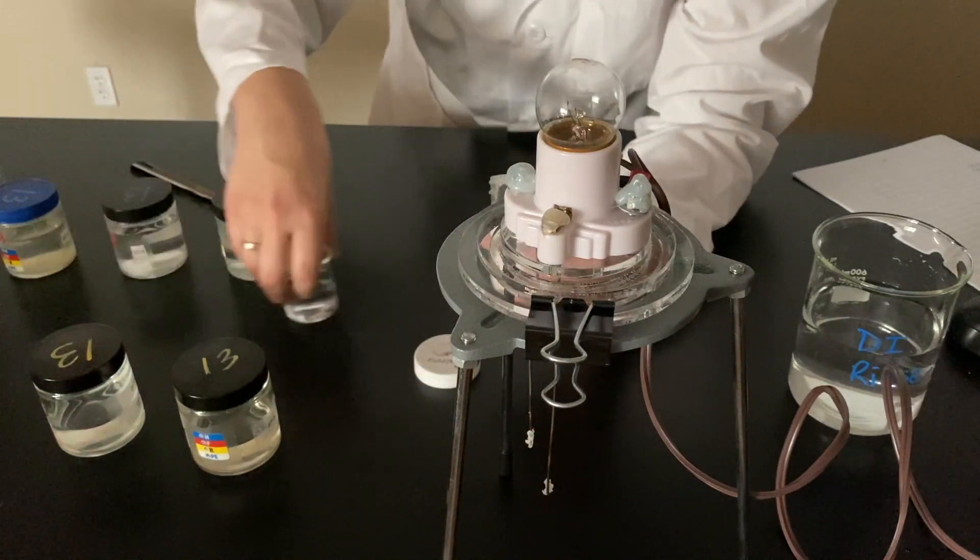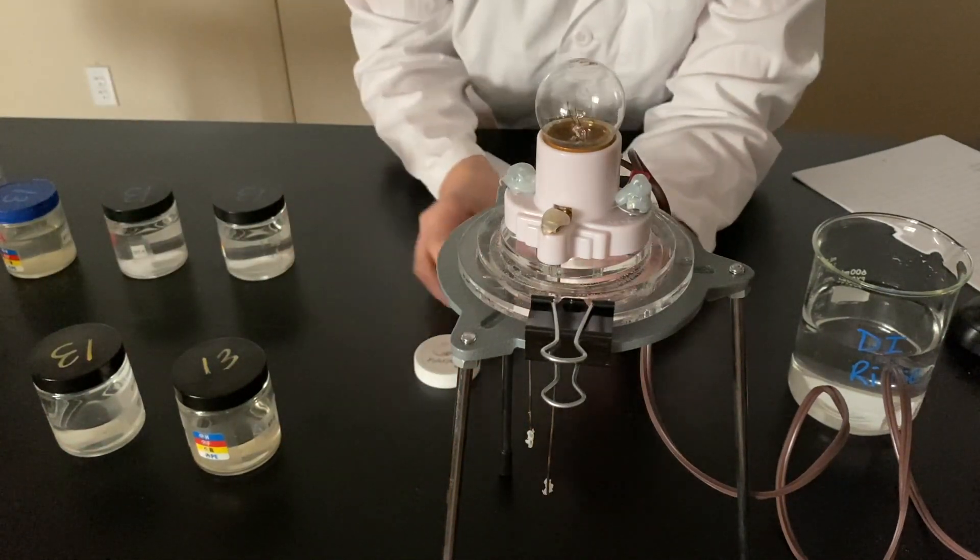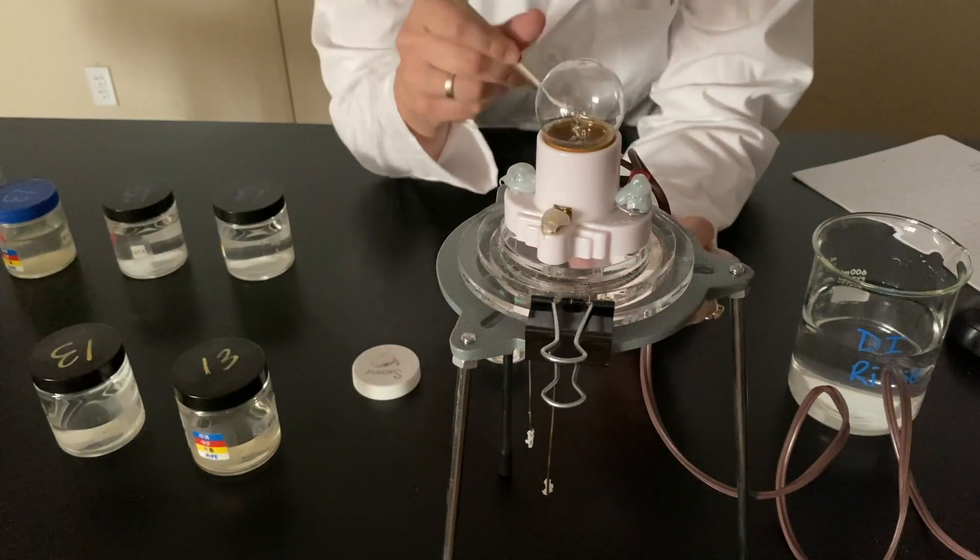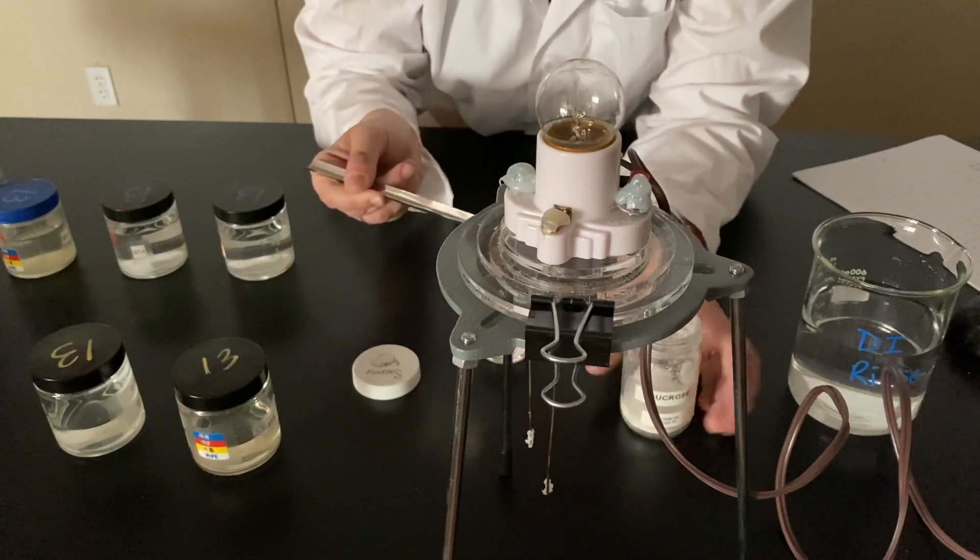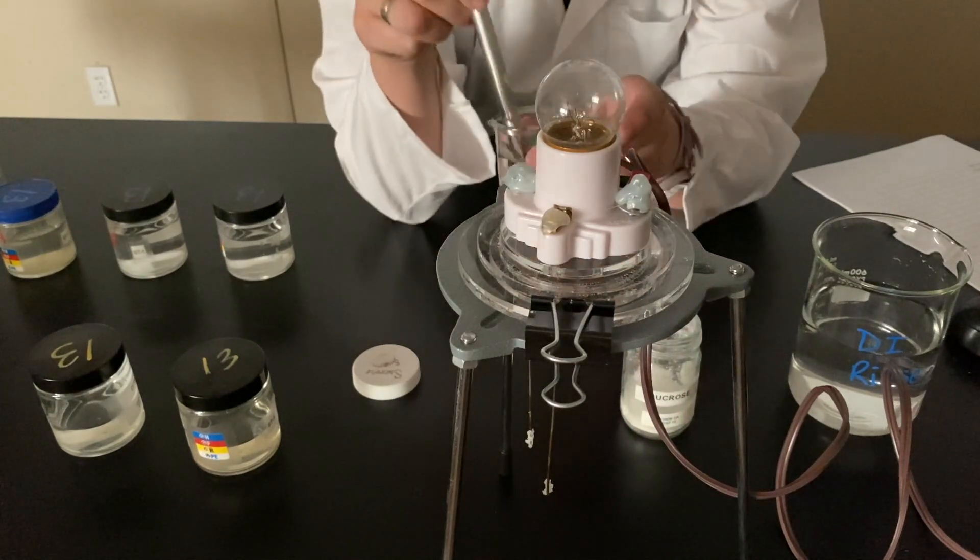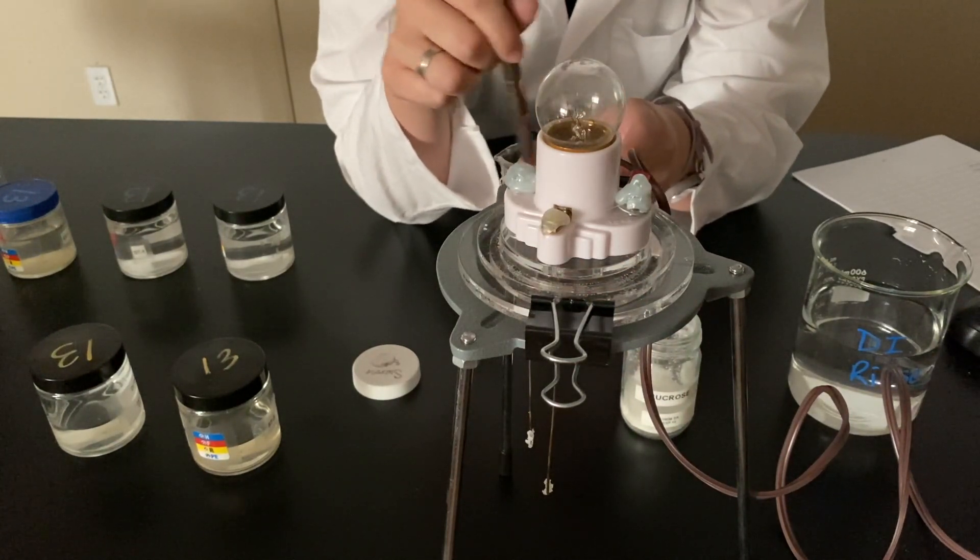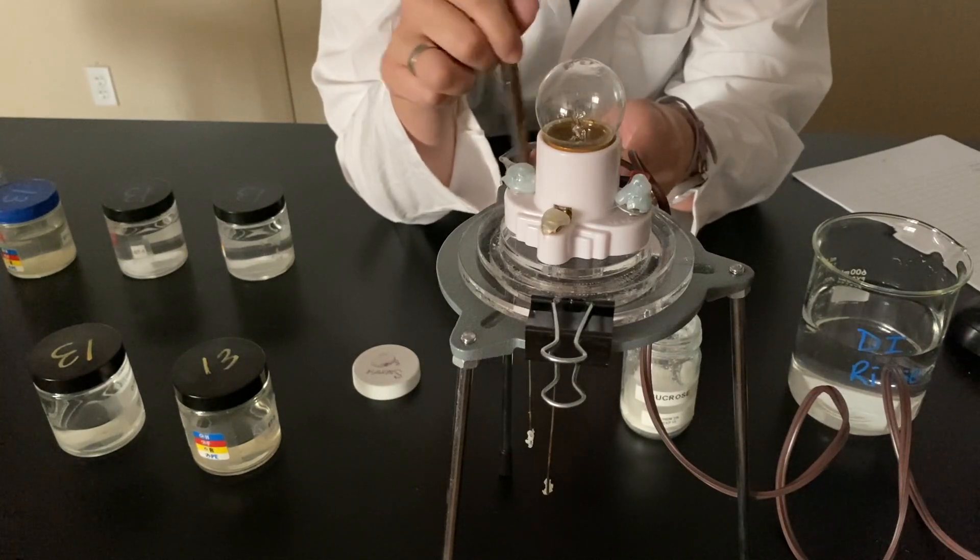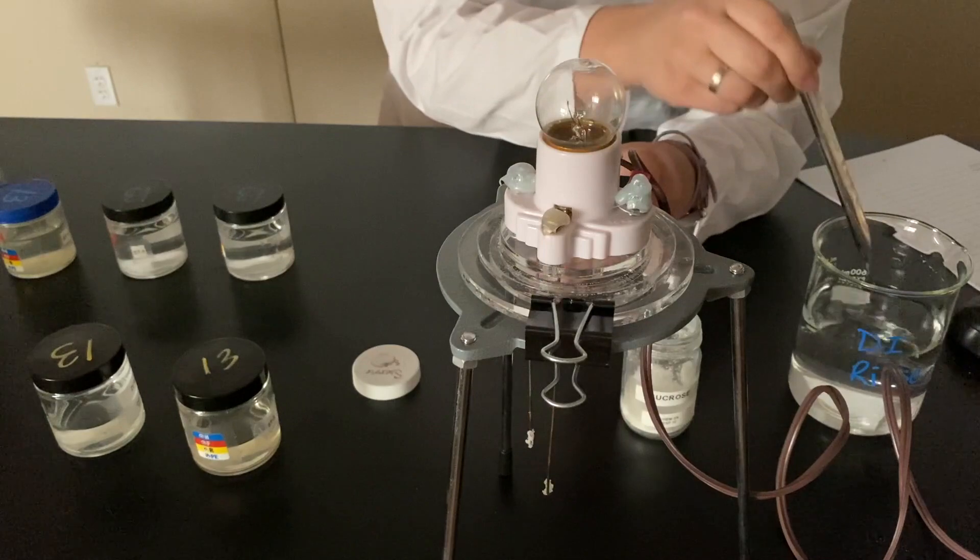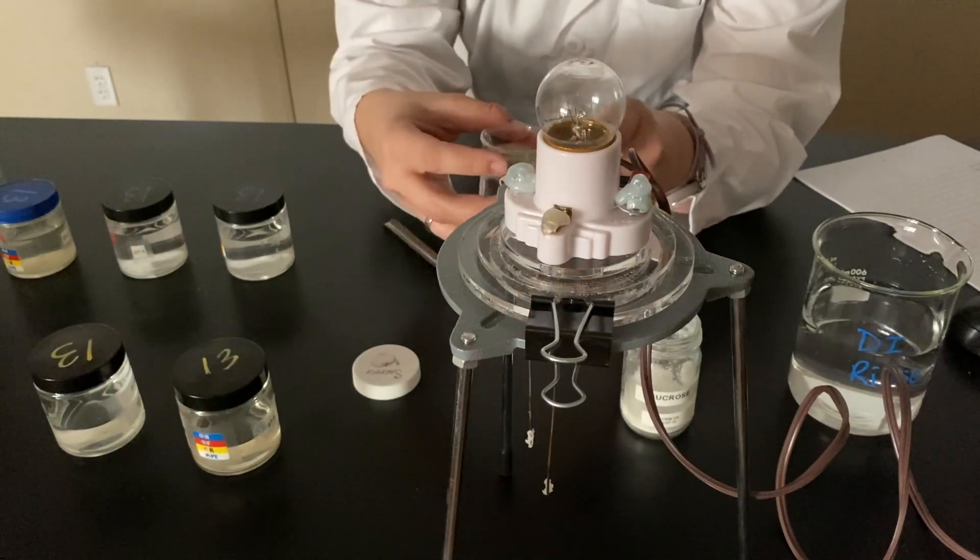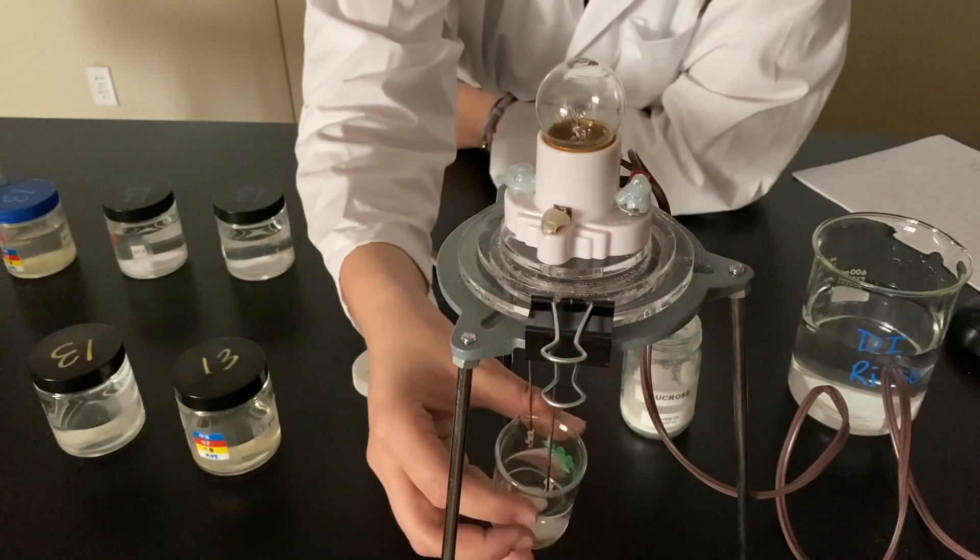Then we're going to test sugar aqueous. So that means I'm going to make a sugar solution here. I'm going to dump some sugar in some DI water. Mix it up. Rinse that off. And we'll see what happens now with the sugar water.